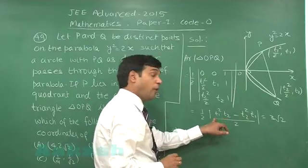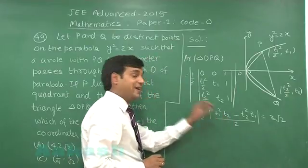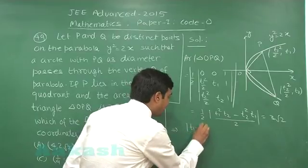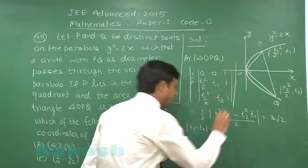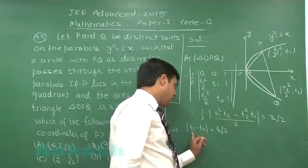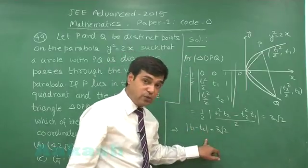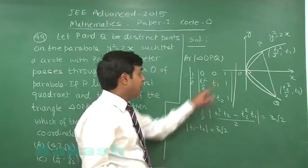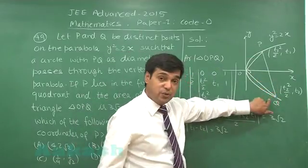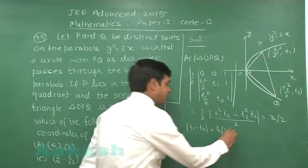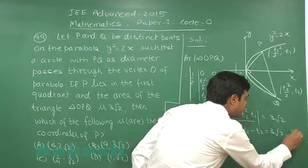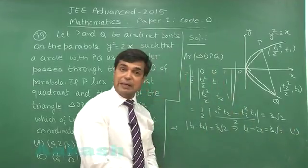Taking t1 t2 common and substituting t1 t2 as minus 4, we have modulus of t1 minus t2 is 3 root 2. Since it is given that t1 is positive, so obviously, t2 will be positive or negative, but less than t1. But as we look at this figure, clearly t2 is negative. We can write this term without modulus t1 minus t2 is 3 root 2 as this quantity is definitely positive.